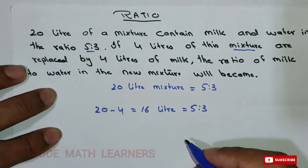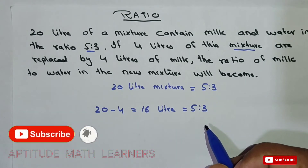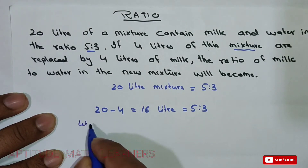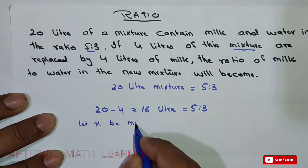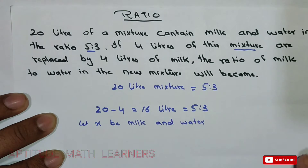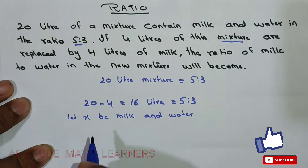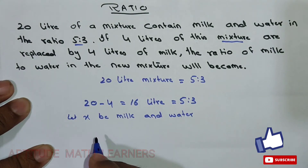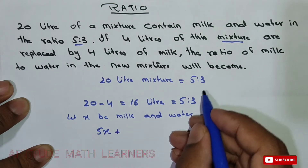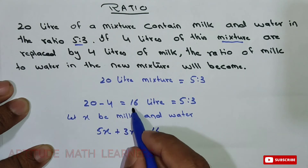Both quantities remain mixed in the ratio 5:3. So let x be the multiplier for milk and water. We set up: 5x for milk plus 3x for water equals the total of 16 litres.